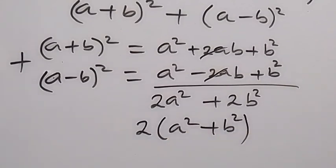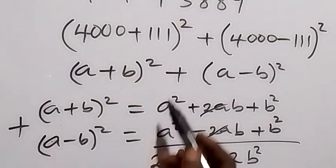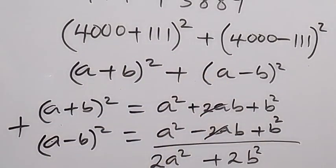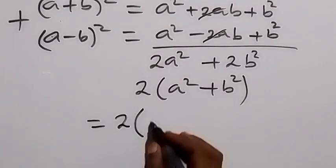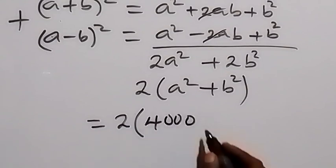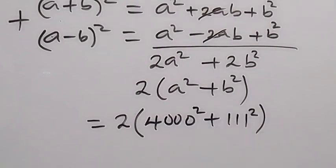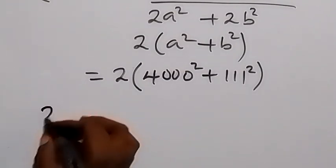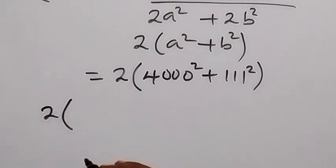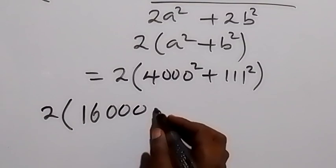Now from here, representing 4000 as a and 111 as b, that expression becomes 2 times (4000 squared plus 111 squared). From here, we square 4000 — that means 4000 times 4000 — and that will simply be 2 times bracket: that gives us 16 million, so we have 16 followed by six zeros.